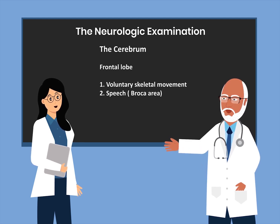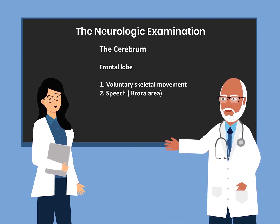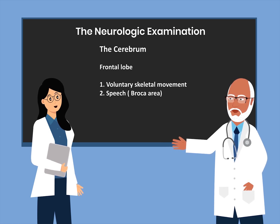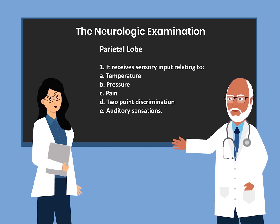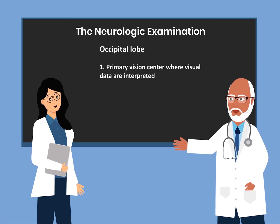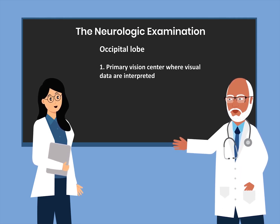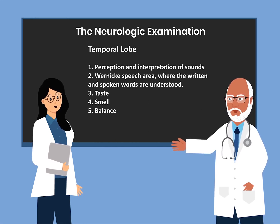The cerebrum has a frontal lobe, a parietal lobe, an occipital lobe, and a temporal lobe. The frontal lobe is responsible for voluntary skeletal movement and also for speech in the Broca's area. The parietal lobe receives sensory input relating to temperature, pressure, pain, two-point discrimination, and auditory sensations. The occipital lobe is responsible for the primary vision center, where visual data are interpreted. The temporal lobe is involved in perception and interpretation of sounds, the Wernicke speech area where written and spoken words are understood, and it's also involved in taste, smell, and balance.